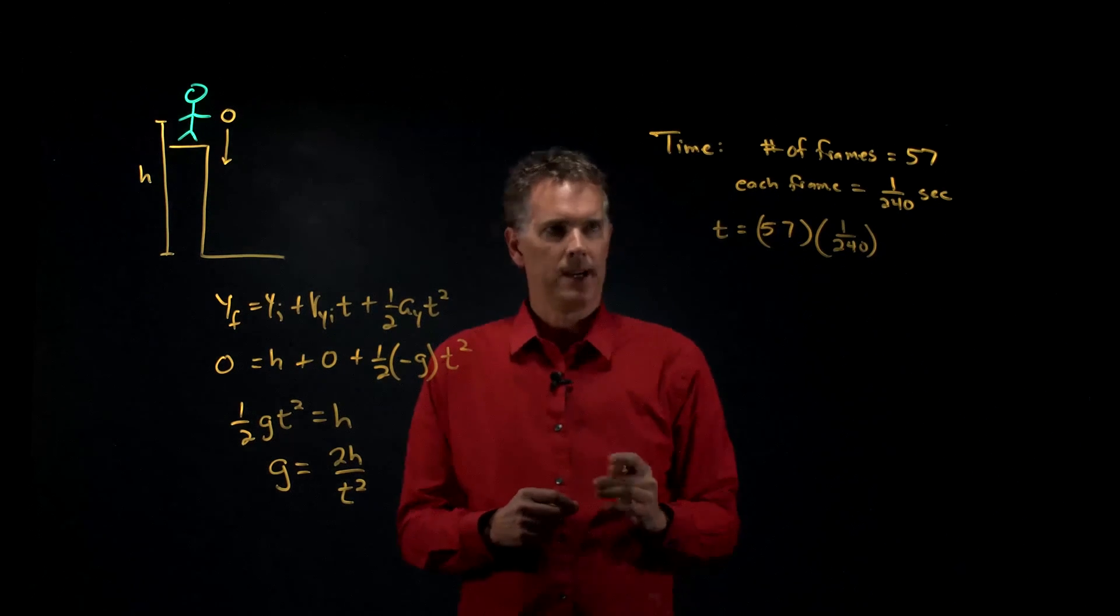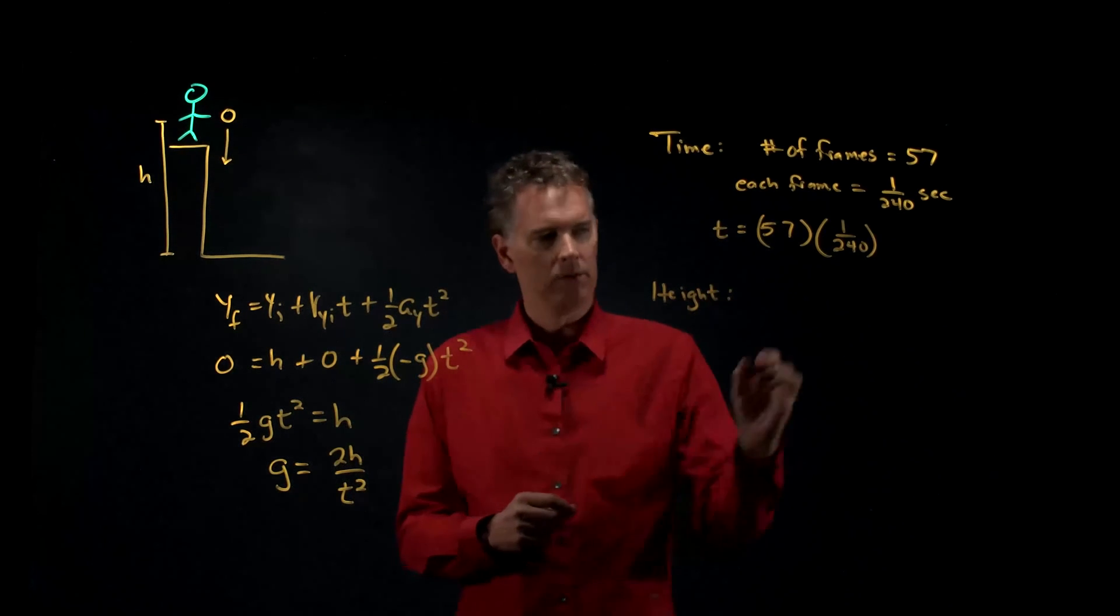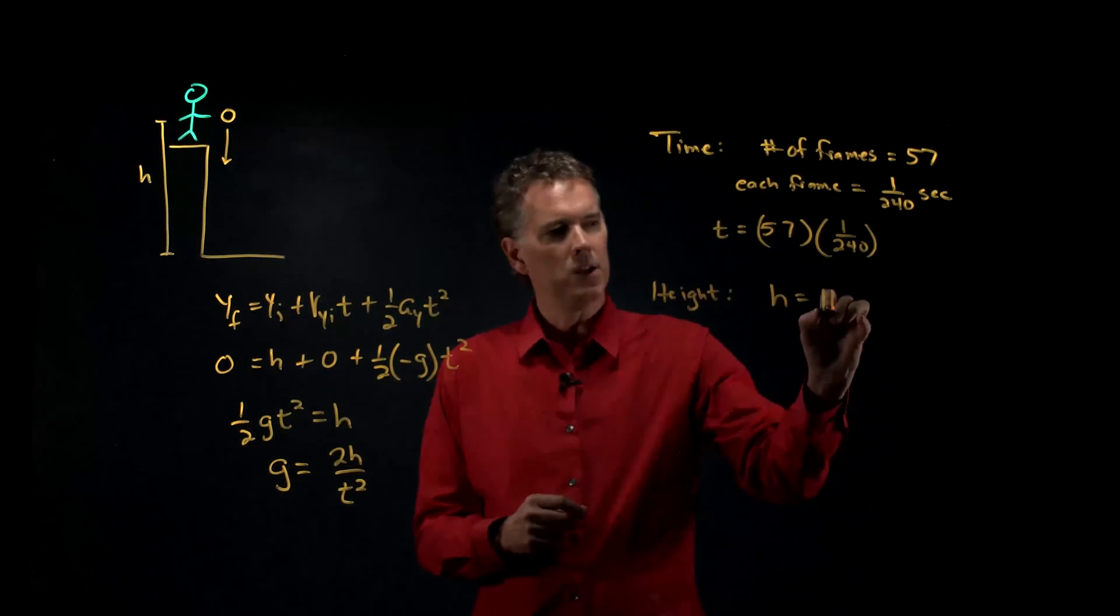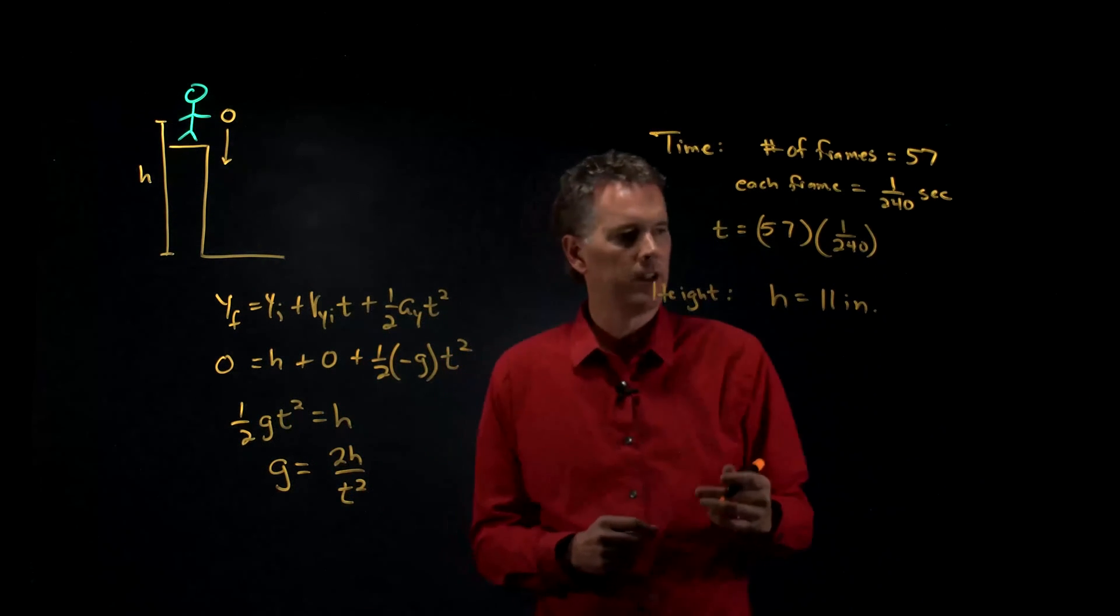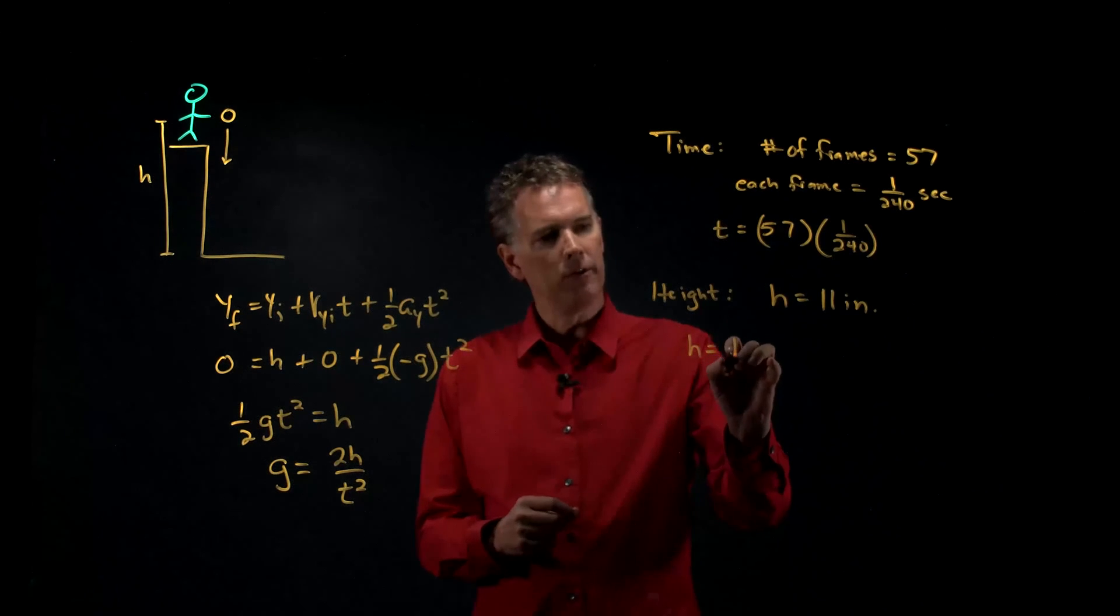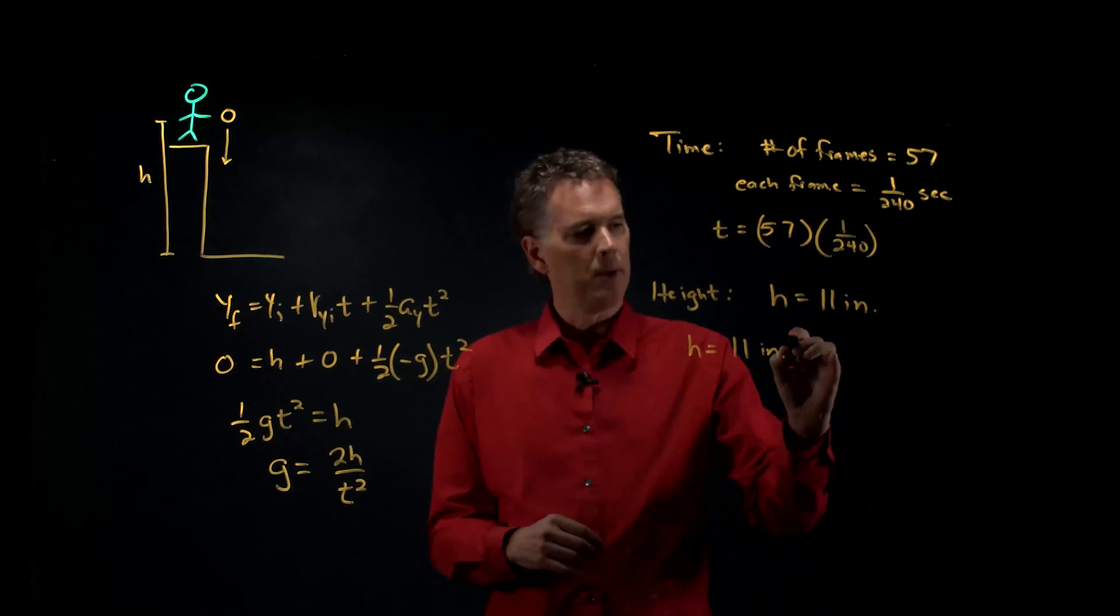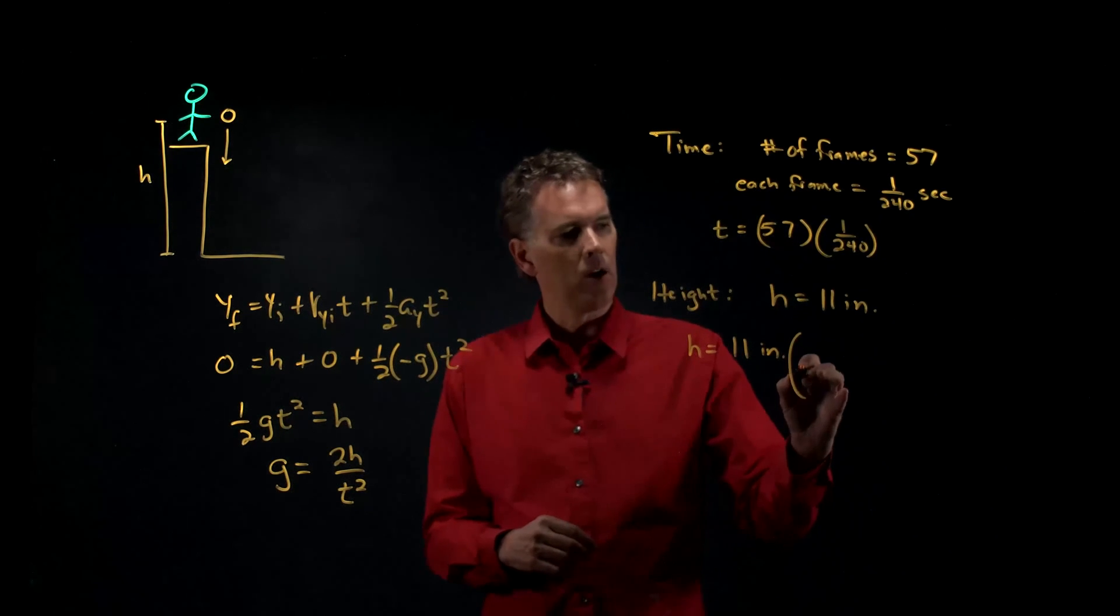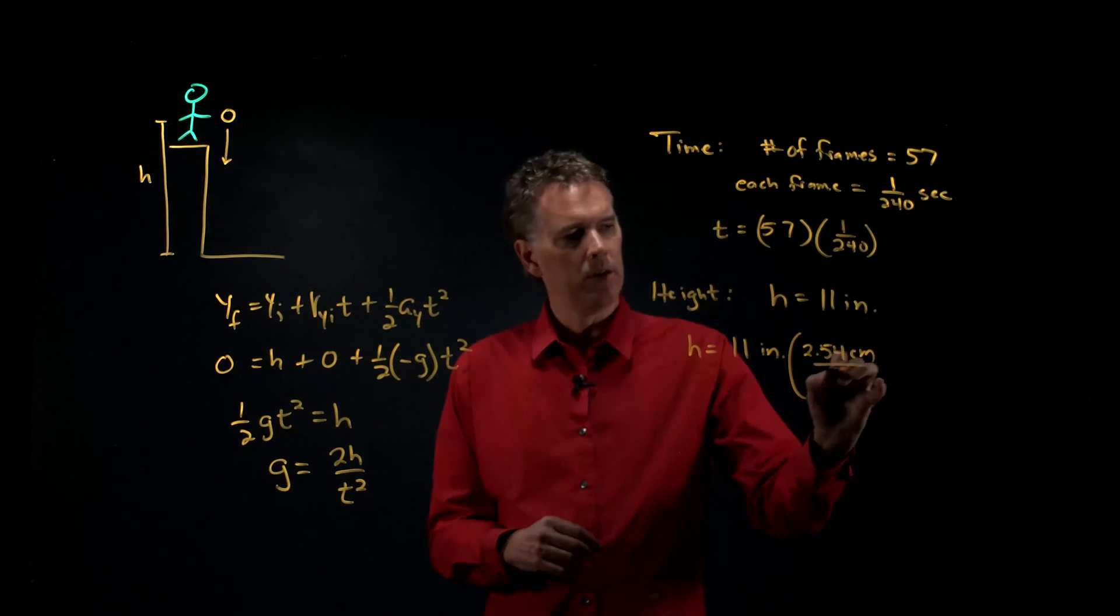What about the height? Well the height, h, we know is exactly 11 inches. But we need to do this in SI units and so we have to convert this to meters. How do you do that? Well, we know that any time you convert from one unit to another, you just need to multiply by 1. So I know that there are 2.54 centimeters per inch. And I know that there are 100 centimeters per meter.